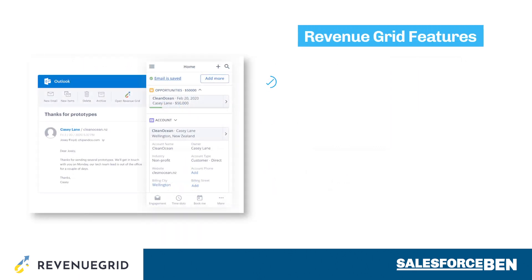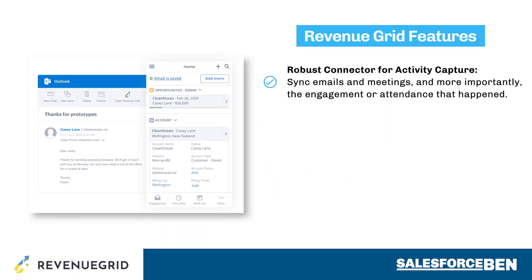There's a robust connector for activity capture. By activities, I'm referring to the ways that prospects engage with the sales team that are often decentralized and disconnected from the CRM — think emails, calls, meetings, and other things. Revenue Grid's plugin for email and calendar will sync emails and meetings, and more importantly, the engagement or attendance that happened.